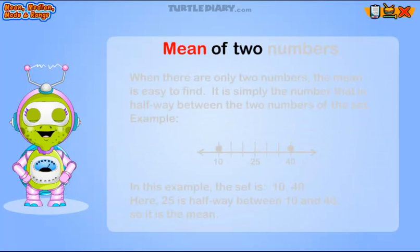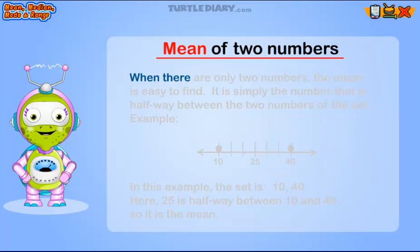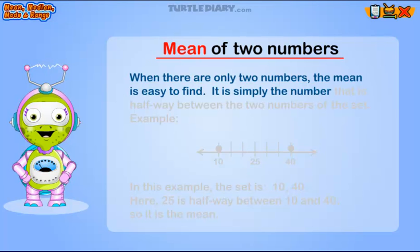Mean of two numbers. When there are only two numbers, the mean is easy to find. It is simply the number that is halfway between the two numbers of the set.